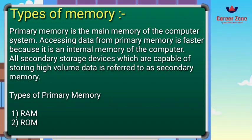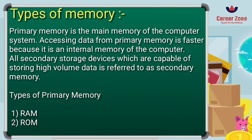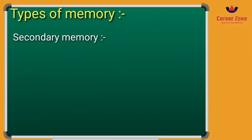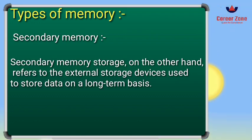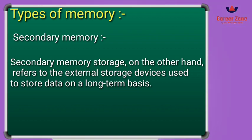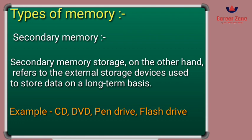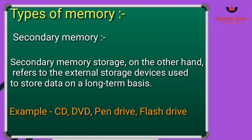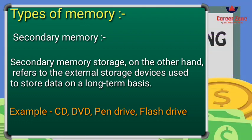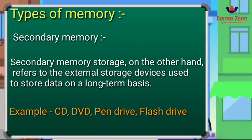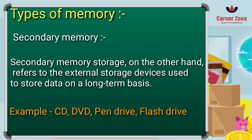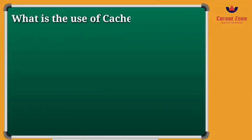RAM stands for Random Access Memory and ROM stands for Read-Only Memory. Secondary memory is also called external memory, and it is also named auxiliary memory. To increase the storage capacity of the computer, we need an additional memory device which is called secondary memory. There are different kinds of secondary memories available in the market, like CD-ROM, DVD, pen drive, and flash drive, which can be attached externally outside the CPU.